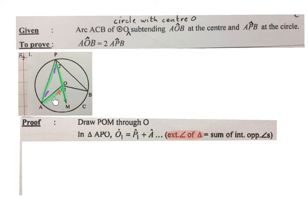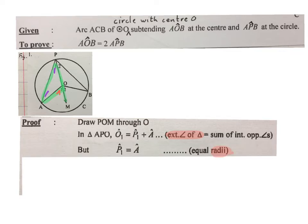So the red one over here, O1, is equal to the purple one and the purple one there. Then you will write, P1 equals to A. Of course, they are opposite equal radii.